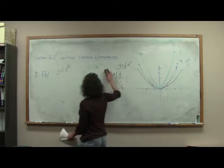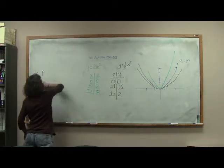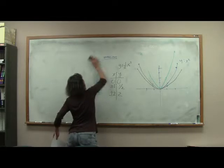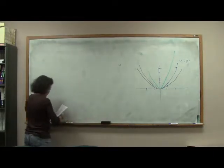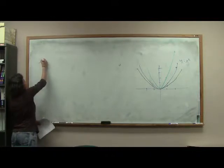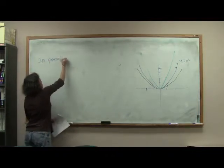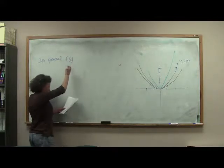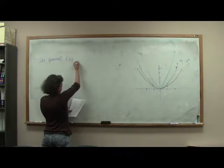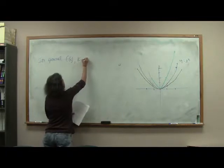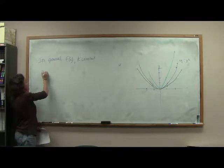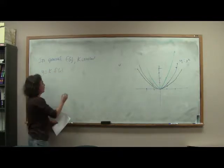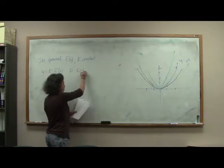So let me write down our in general here. In general, if you have a function f of x, and k is some constant, if we want to look at k times f of x, well, if k is greater than 1,